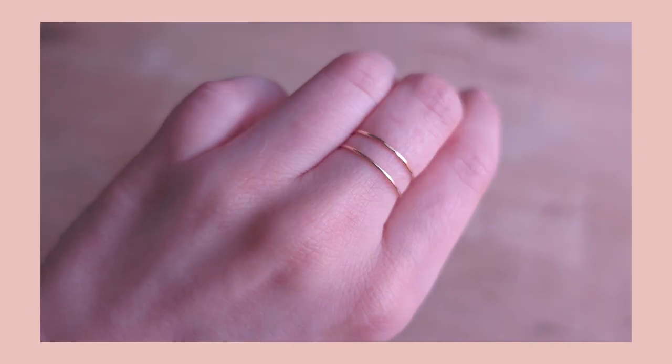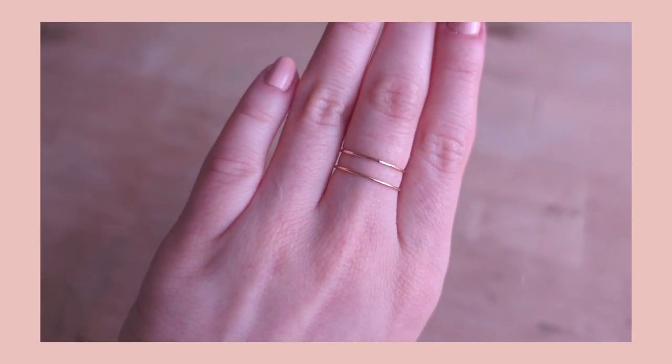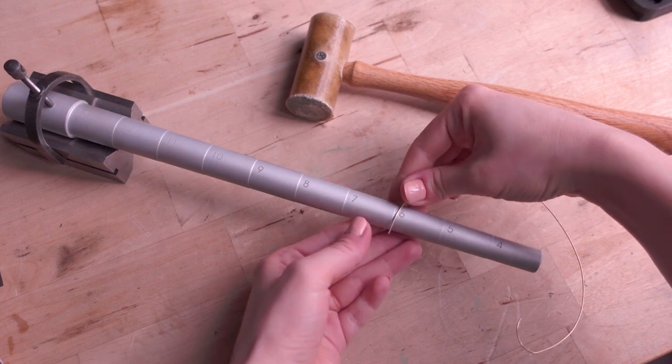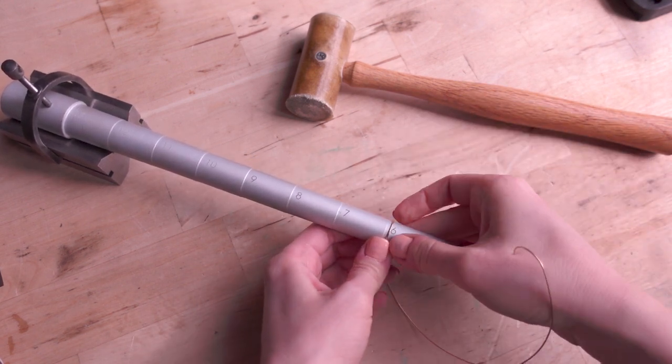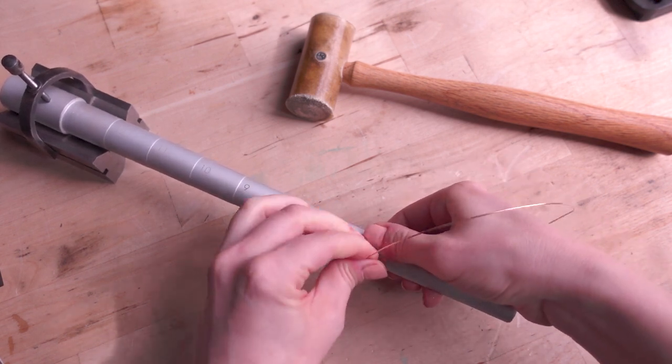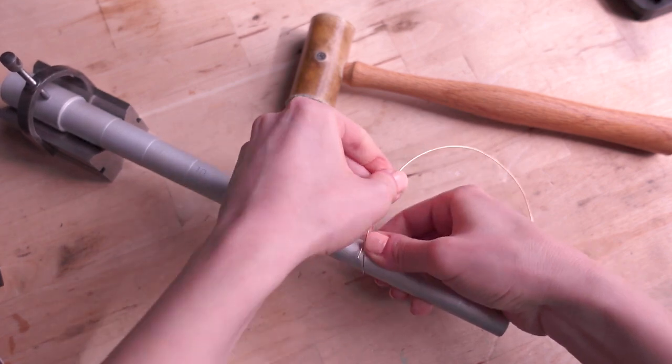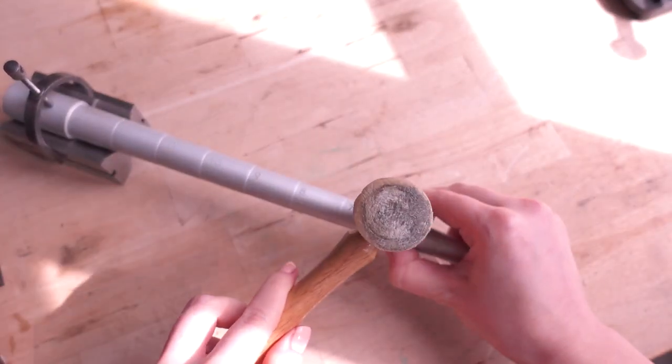Alright, let's get started with these simple and dainty stacking rings. I'm going to start by wrapping this wire around size 6 on the step bezel. It's not very easy. It's actually quite tricky because this is a half hard wire and because it's gold filled you can't really anneal it.